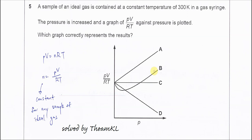Question 5. This is the combined gas law question and it's given the graph PV over RT versus P and it's asked which graph correctly represents the results.